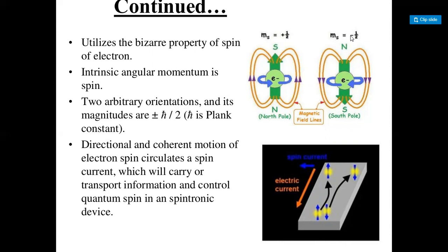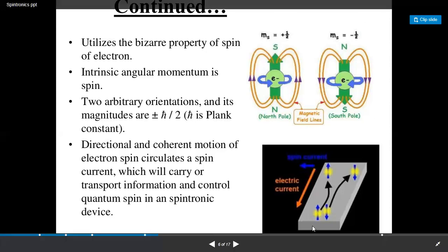The two magnetic fields should change from one another, equal to plus or minus half, in the north-to-south and south-to-north pole directions. The transport of information and quantum spin in the spintronic device involves changes from spin current to electrical current, as seen in the diagram.